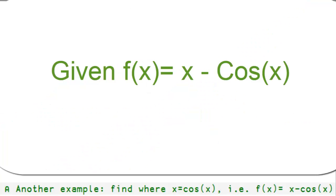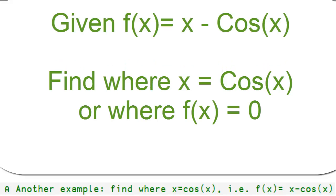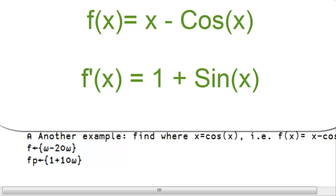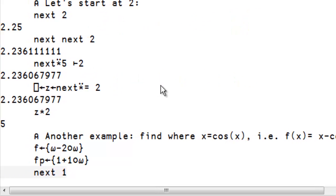In other words, the function x minus the cosine of x, and we want to find where f is equal to 0. So, let's define f. It's derivative. The next position, starting at 1.